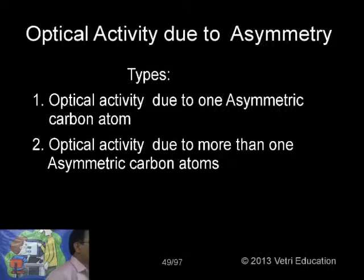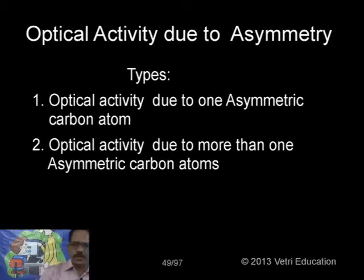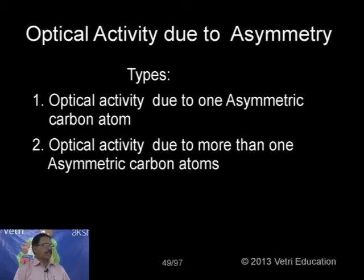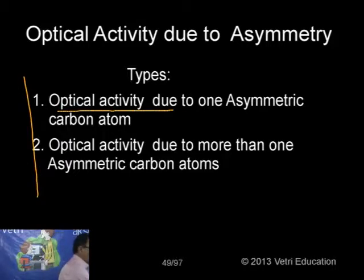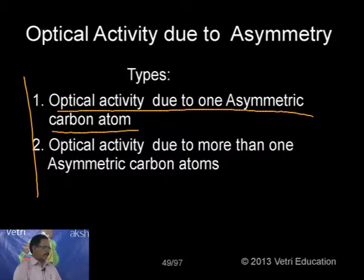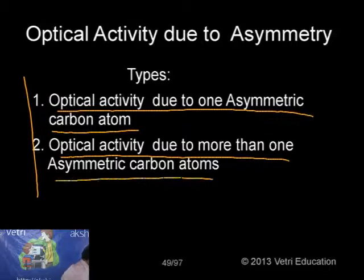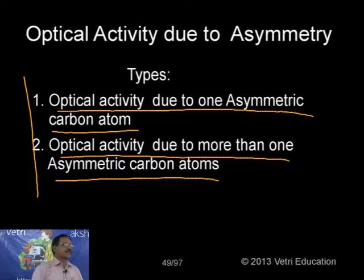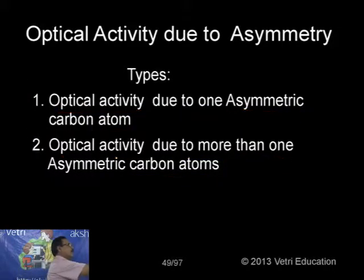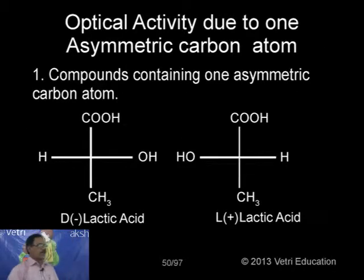Optical activity due to asymmetric carbon: if there is any asymmetric carbon - one or more - then asymmetry arises, and with asymmetry there is optical activity. I can classify asymmetry into two types: type one is optical activity due to one asymmetric carbon atom, and type two is optical activity due to more than one asymmetric carbon atom.